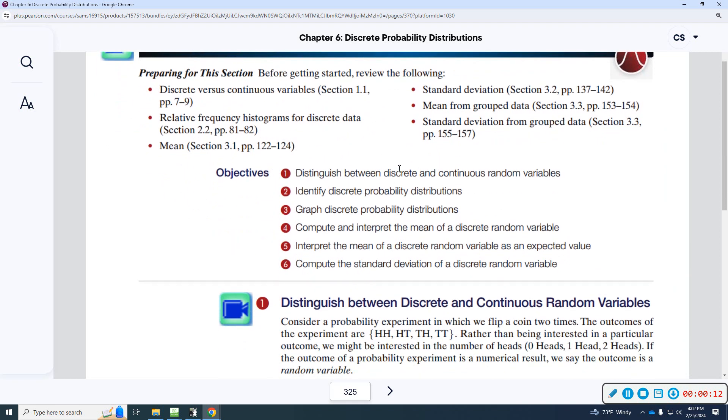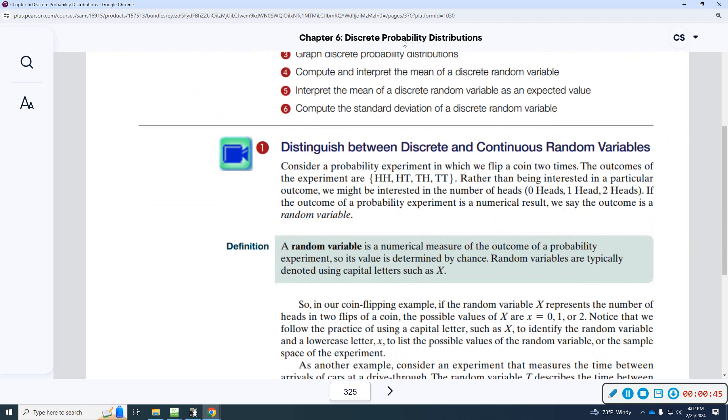Distinguish between discrete and continuous random variables. Identify discrete probability distributions. Graph discrete probability distributions. Compute and interpret the mean of a discrete random variable. Interpret the mean of a discrete random variable as an expected value. And then compute the standard deviation of a discrete random variable. So, these are the learning objectives. Not all of these may appear on the homework, but it is important to at least go over all of them.